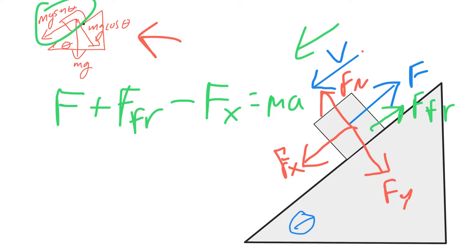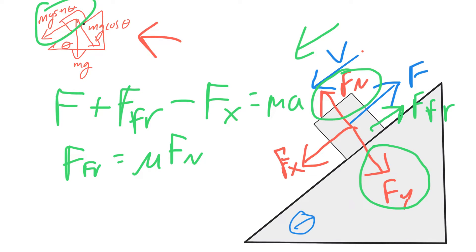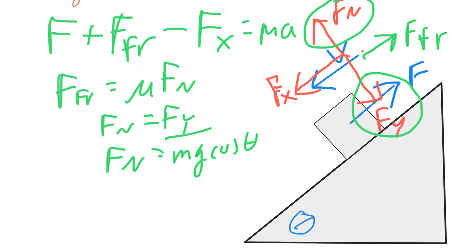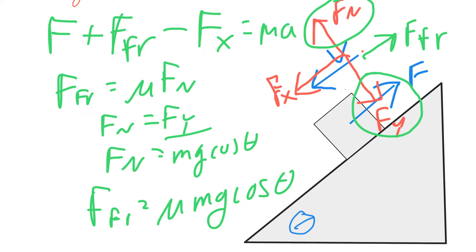In the last problem I didn't solve for friction explicitly, so let's do that now. Friction equals mu times the normal force. The normal force counteracts the component of gravity perpendicular to the ramp, so the normal force equals f sub y, which equals mg cosine theta. Therefore, friction equals mu times mg cosine theta. If asked to derive the full equation, substitute this value in directly.